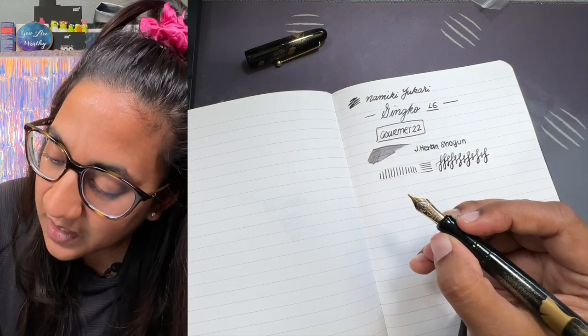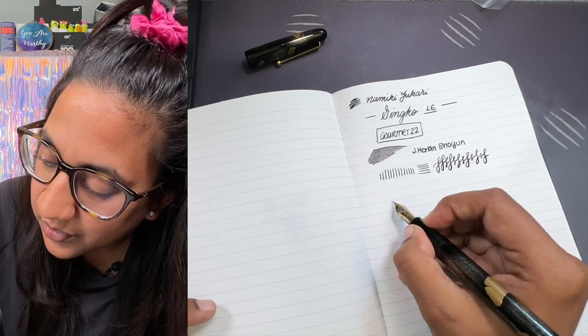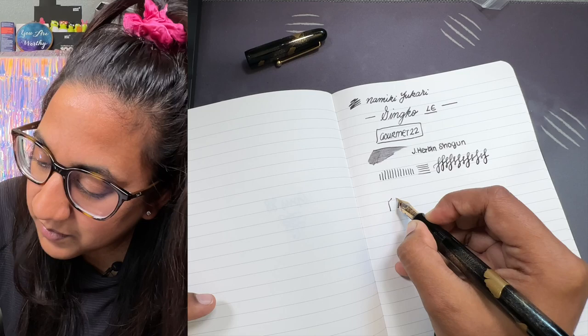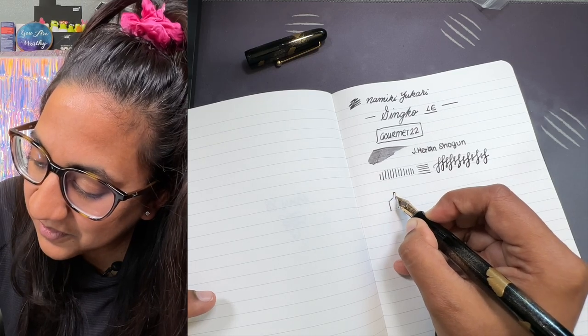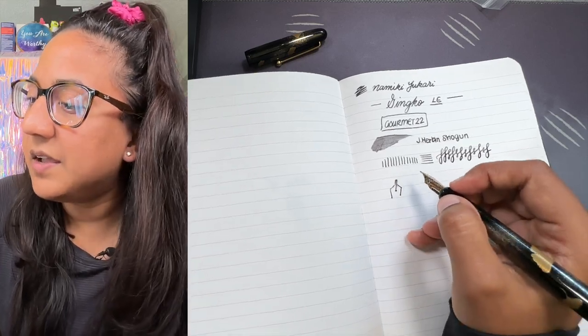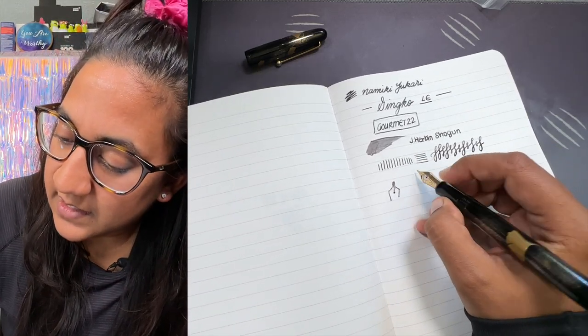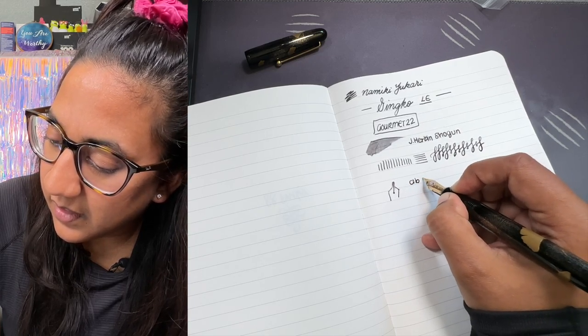I really like the shape of the Namiki nibs, the Yukari nibs. They have shoulders, so it goes like this and then it comes to that, and then it has like the little tines at the end. That's a terrible drawing but that's how I feel.